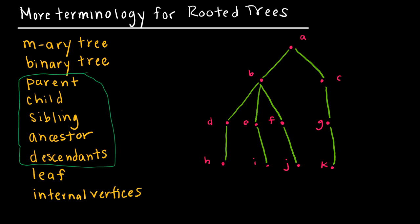If I'm looking at A, A has a child of B and a child of C. So A is the parent and B and C are the children. Siblings are nodes that have the same parent, so B and C would be considered siblings.